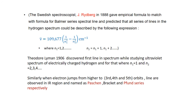Similarly, when electrons jump from higher orbits to the 3rd, 4th, and 5th orbits respectively, lines are observed in the infrared region. These are named the Paschen, Brackett, and Pfund series respectively.